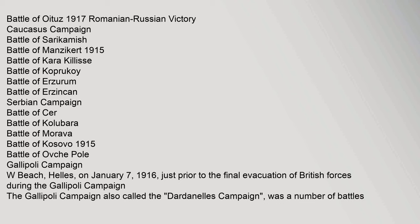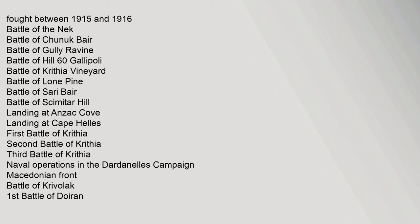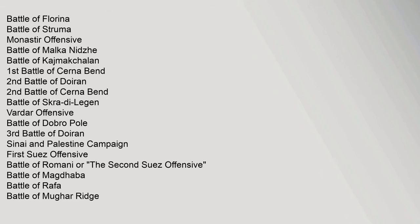The Gallipoli Campaign, also called the Dardanelles Campaign, was a number of battles fought between 1915 and 1916, including: Battle of the Nek; Battle of Chunuk Bair; Battle of Gully Ravine. Macedonian Front: Second Battle of Doiran; Second Battle of Chernabend; Battle of Skra-di-Legen; Vardar Offensive; Battle of Dobro Pole; Third Battle of Doiran.